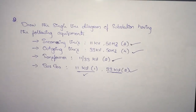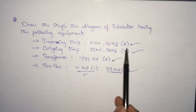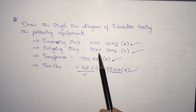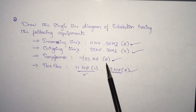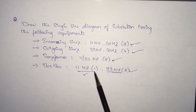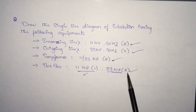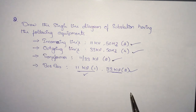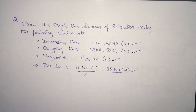Here is your question fulfilled: two incoming lines of 11 kV, four outgoing lines of 33 kV, two transformers of 11/33 kV, one bus bar of 11 kV, and a double bus bar of 33 kV. If you have any doubts, please comment in the comment box — I'll reply. Thank you, we'll meet in the next video.